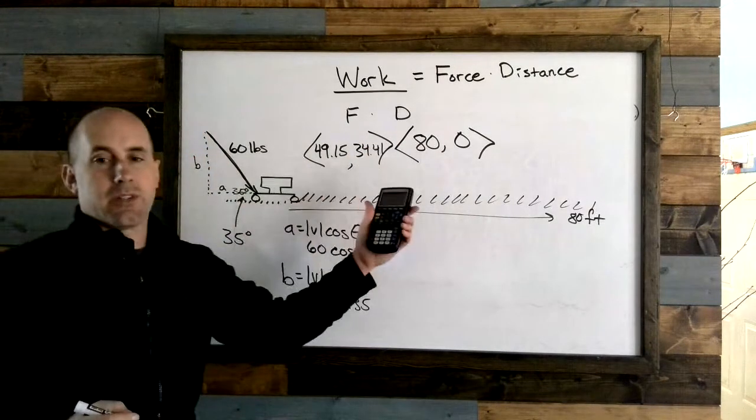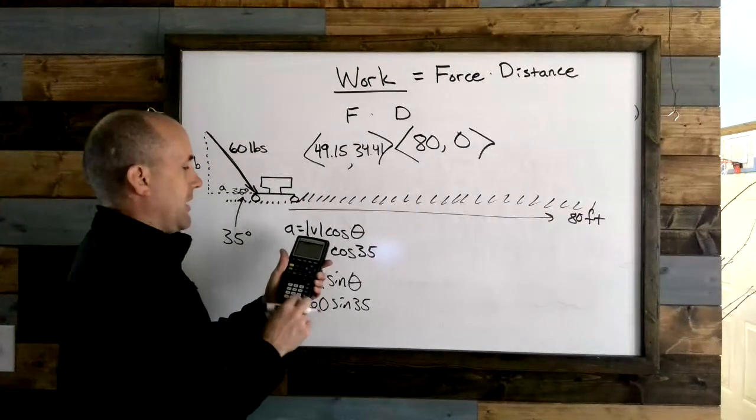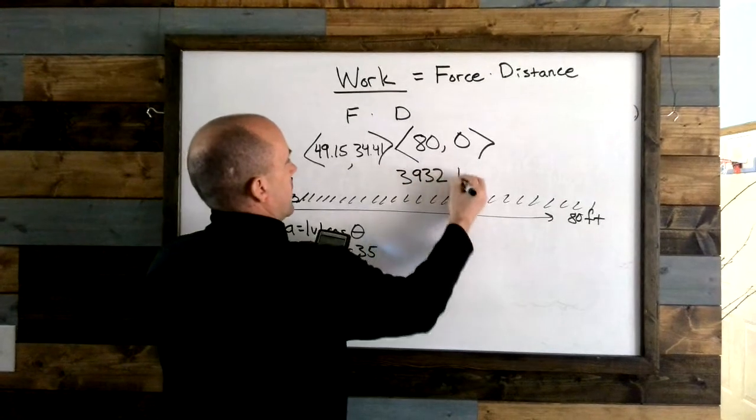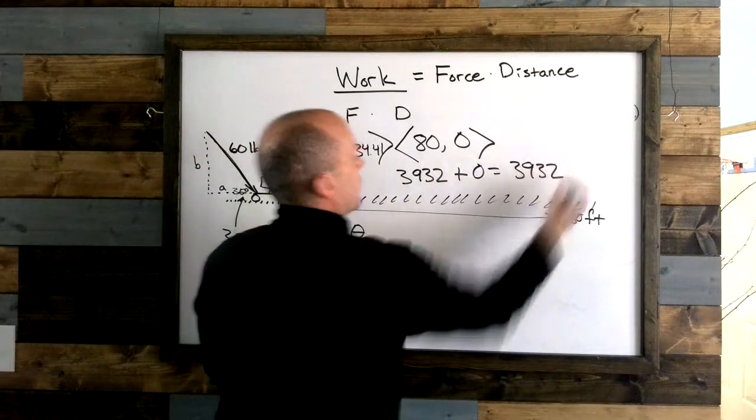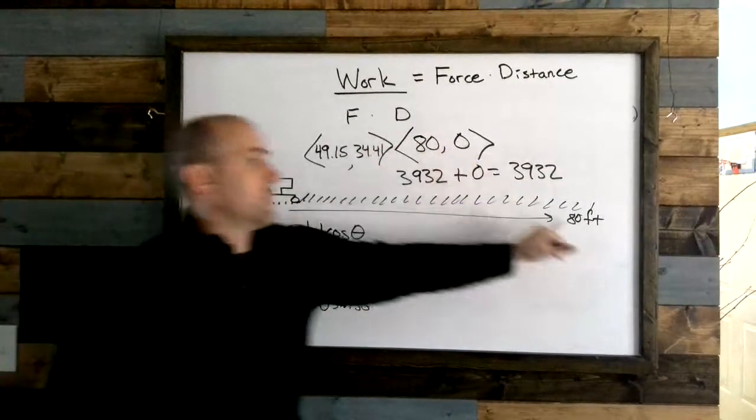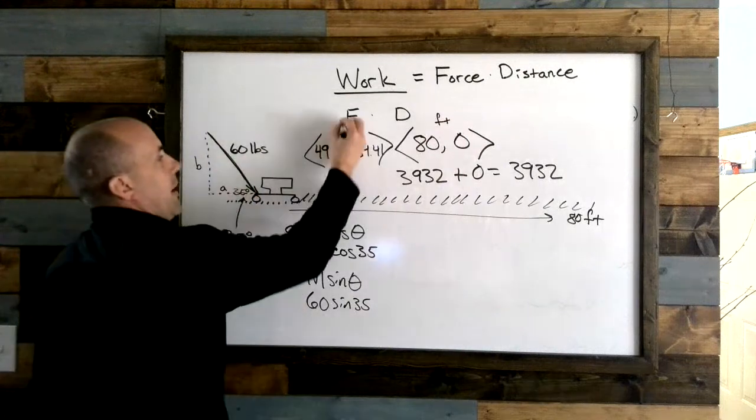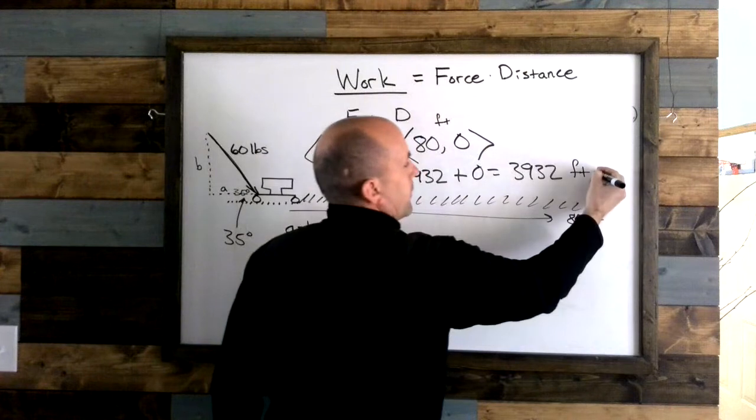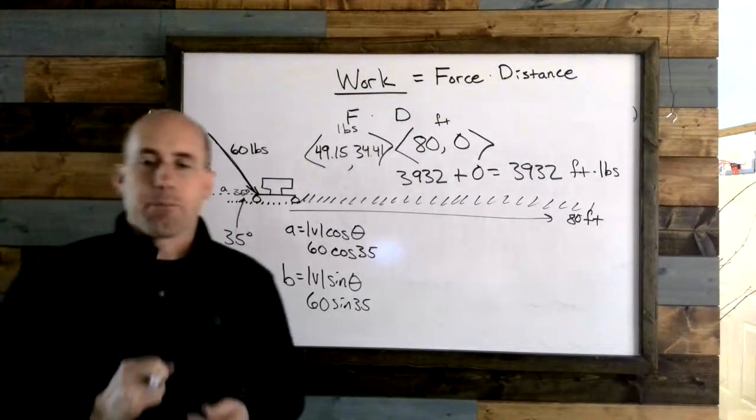As I compute this dot product, I take the 49.15 times 80 and I get 3932, plus then 34.41 times zero is zero. So 3932, and how we label this is you have a distance which is measured in feet and you have a force which was measured in pounds, so we say it's foot-pounds, not per, but foot times pounds, foot-pounds of work that's accomplished in that scenario.